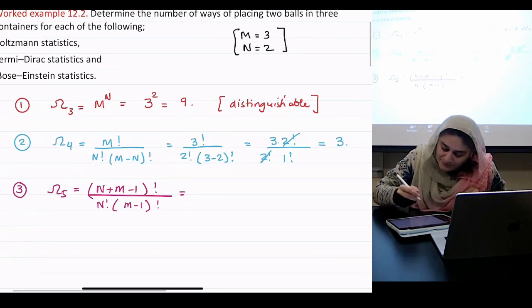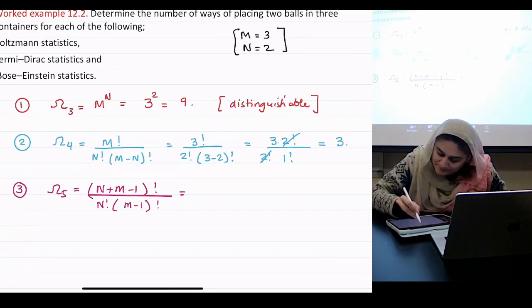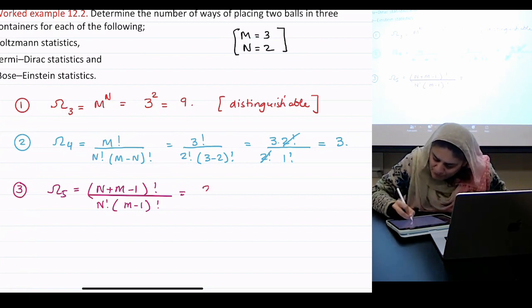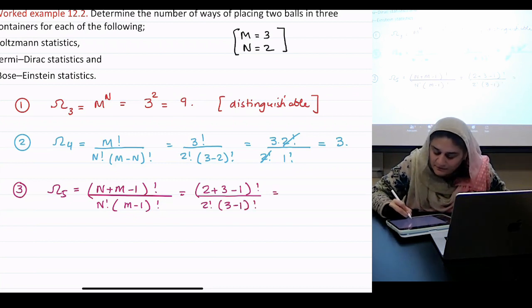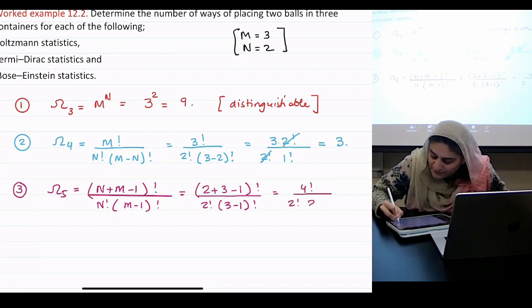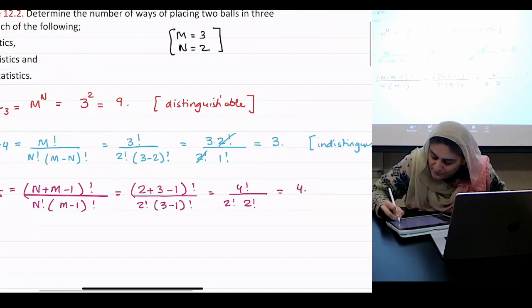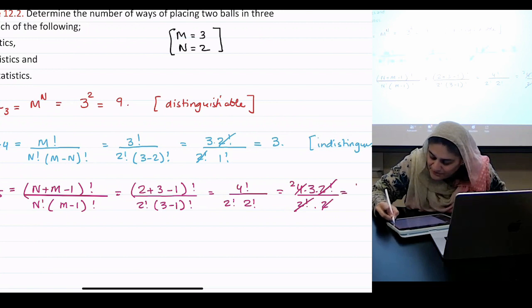Okay, n, m, what will it be? n plus m minus 1, so 2 plus 3 minus 1. That is what? 4 factorial over 2 factorial over 2 factorial. And that's 4 times 3 times 2 divided by 2 times 2. 2 goes away, 2 goes away. The answer is 6.